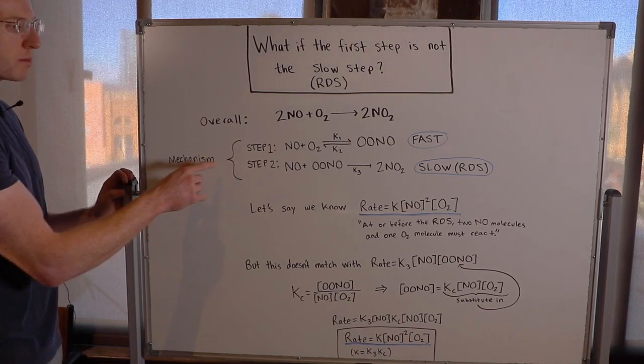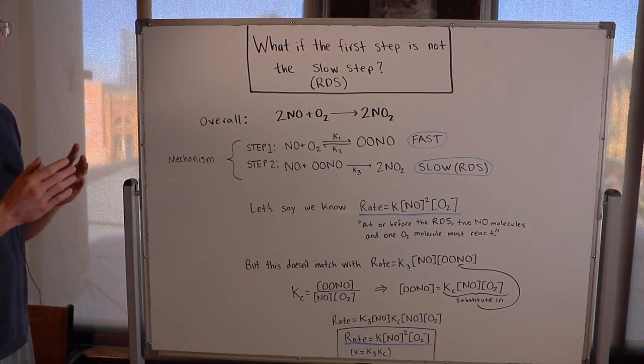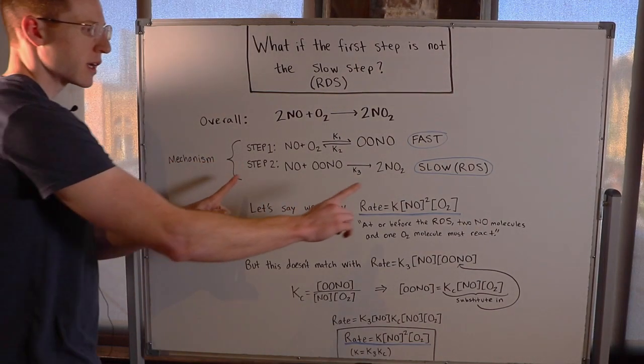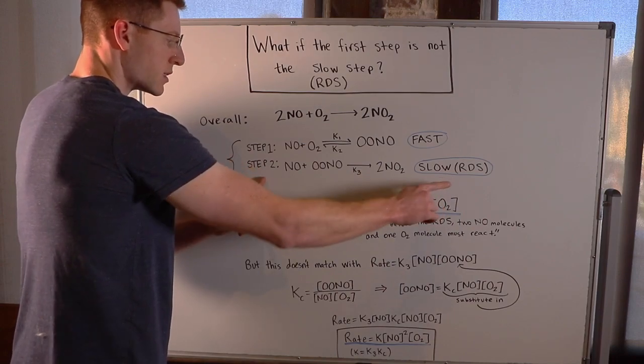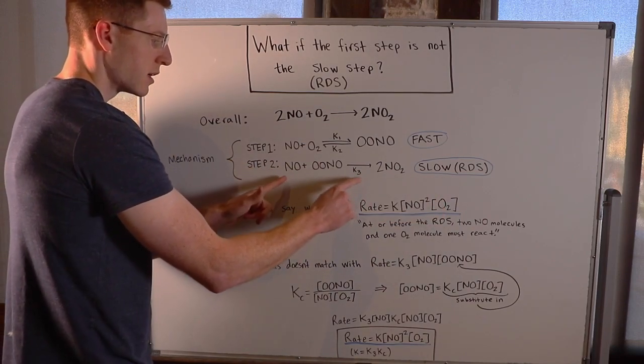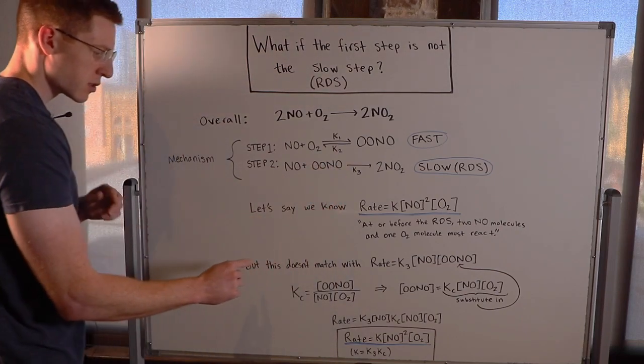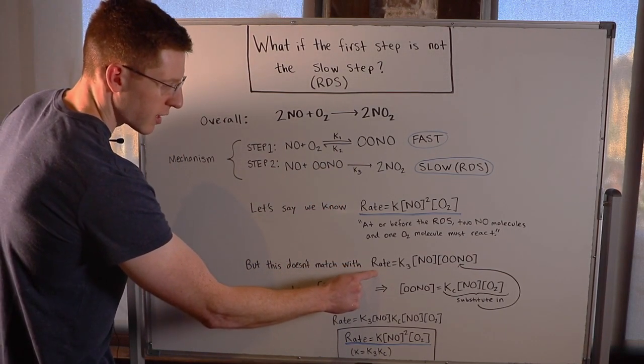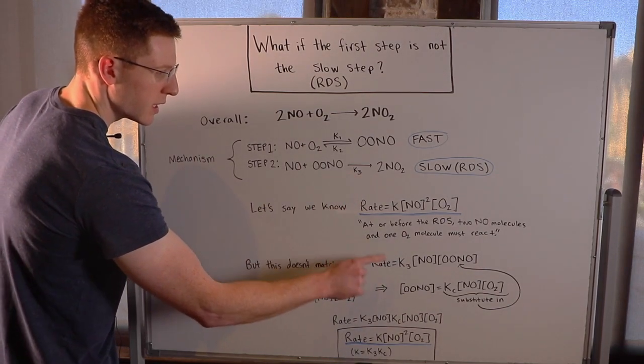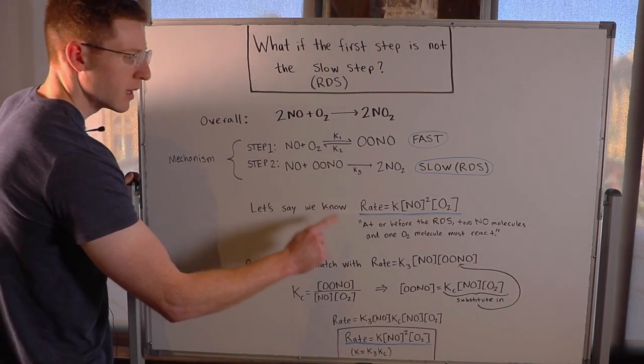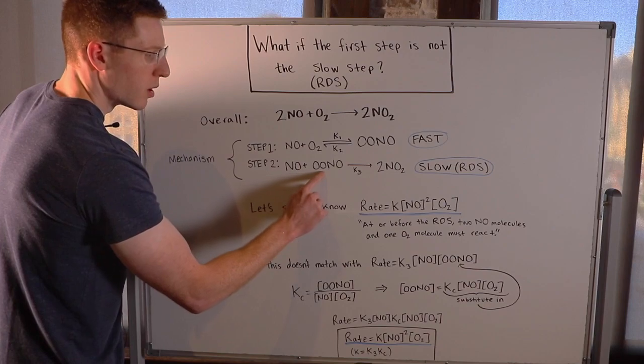So looking at the mechanism here, based on what we've learned thus far, we know that to write the rate law, we should look at the rate determining step and say rate equals the rate constant times the concentration of this times the concentration of this. So that would give us this, right? Rate equals K3 times the concentration of NO times the concentration of OONO.